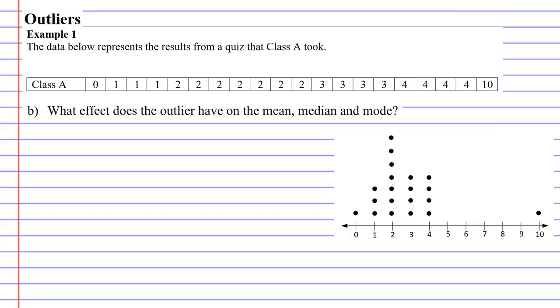All right, we're going to look at question part B in outliers. Part B just said, what effect does the outlier have on the mean, the median, and the mode? Okay, so what we'll do is we'll start by calculating the mean, median, and mode for this set of values here.